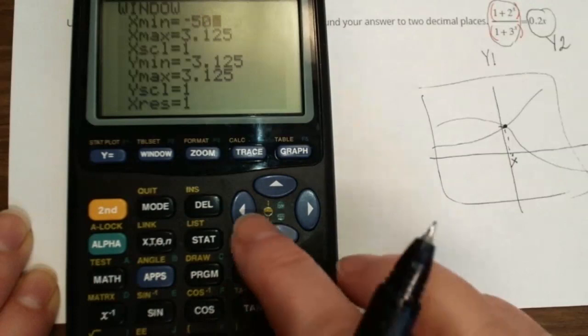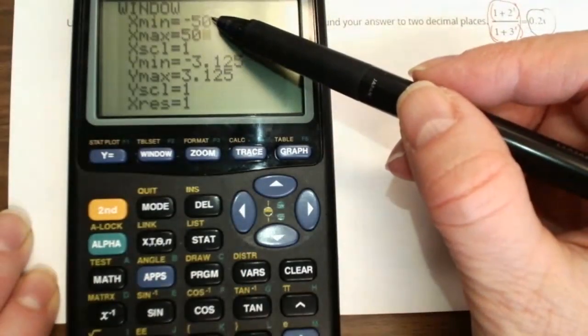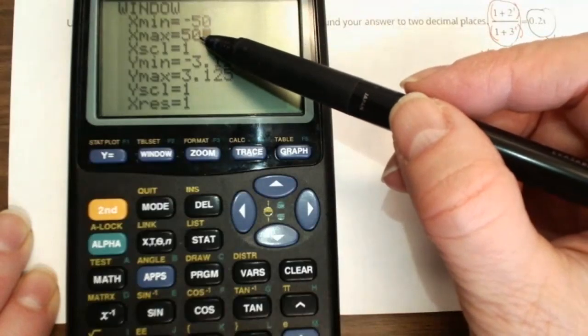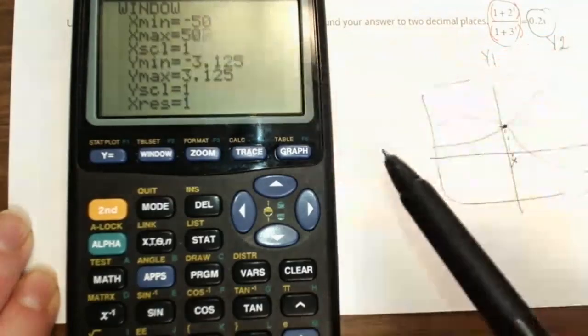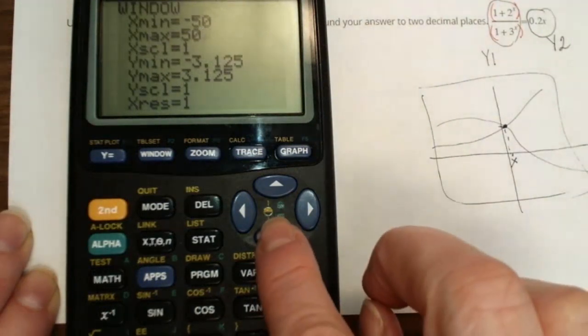Negative 50, 50. So your x will start from negative 50 and will go to positive 50, and the scale on the x will be 1, so you will count by 1 all the time.